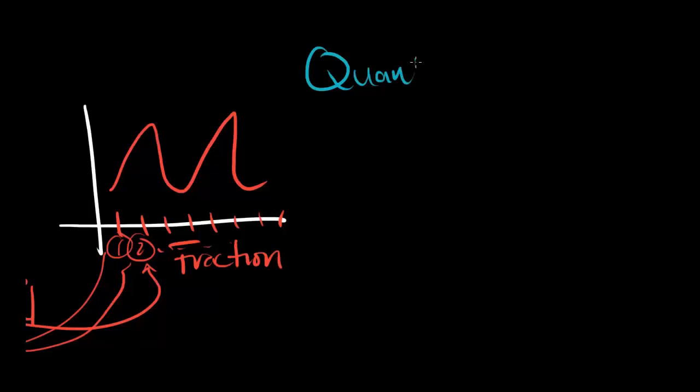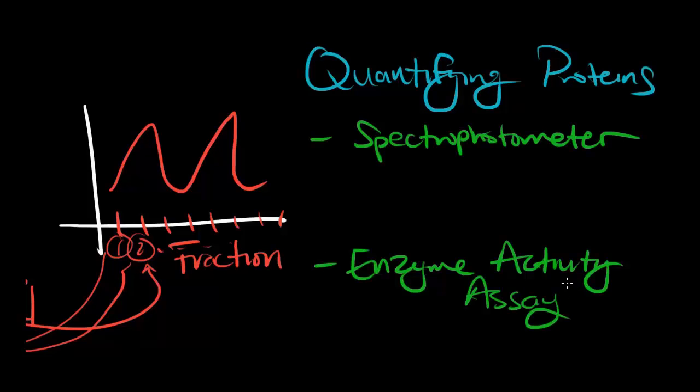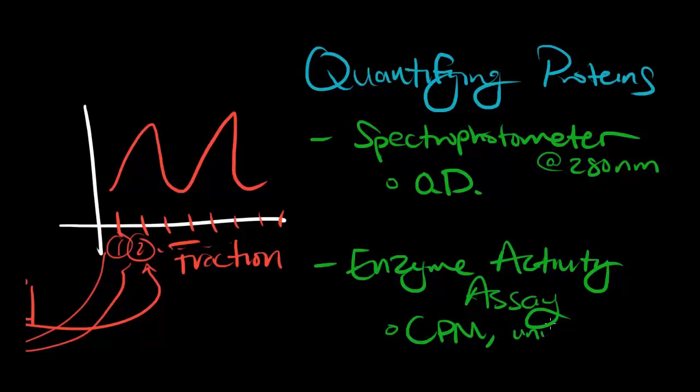For the next couple of minutes, let's talk about quantifying proteins. Usually this is done in two ways. Spectrophotometry and enzyme activity assays each give us different units. Spec will give us units in OD, which stands for optical density. Assays will give us counts per minute or units per minute. To measure OD, we take a fraction and put it into a spectrophotometer, which will shine light through the test tube. Based on how much of the light is blocked at the 280 nanometer wavelength, we can then measure relative amounts of protein. The more proteins there are in a fraction, the more light gets blocked. High peaks of optical density indicate a high amount of proteins.